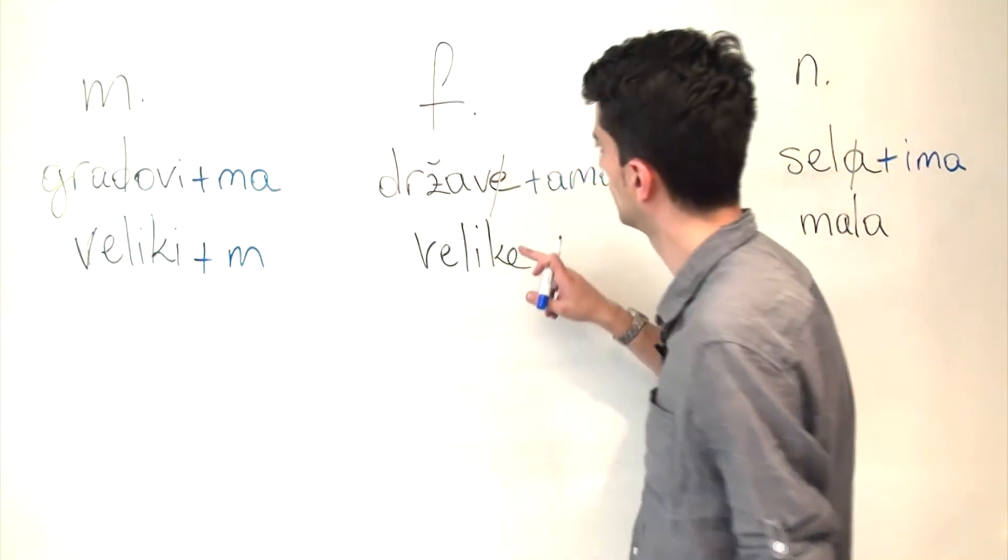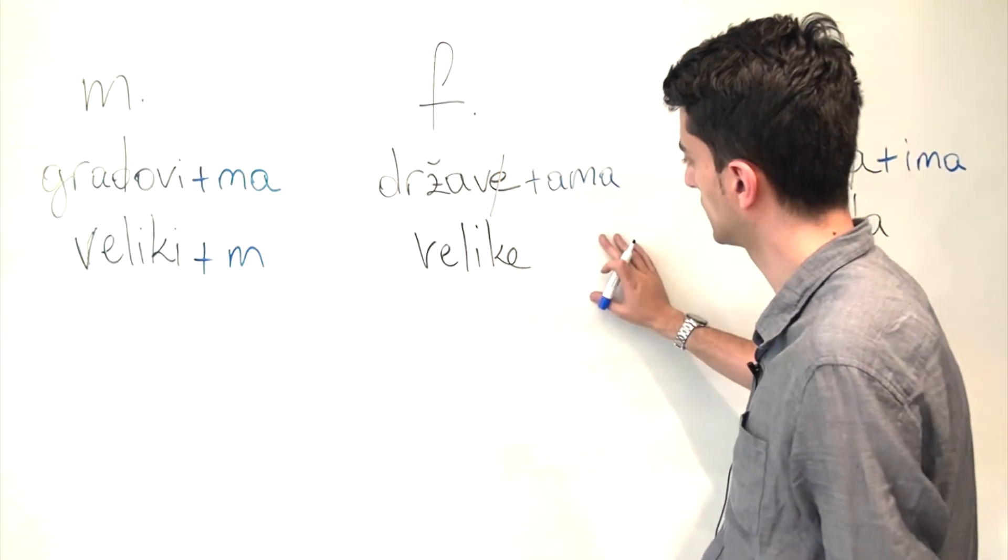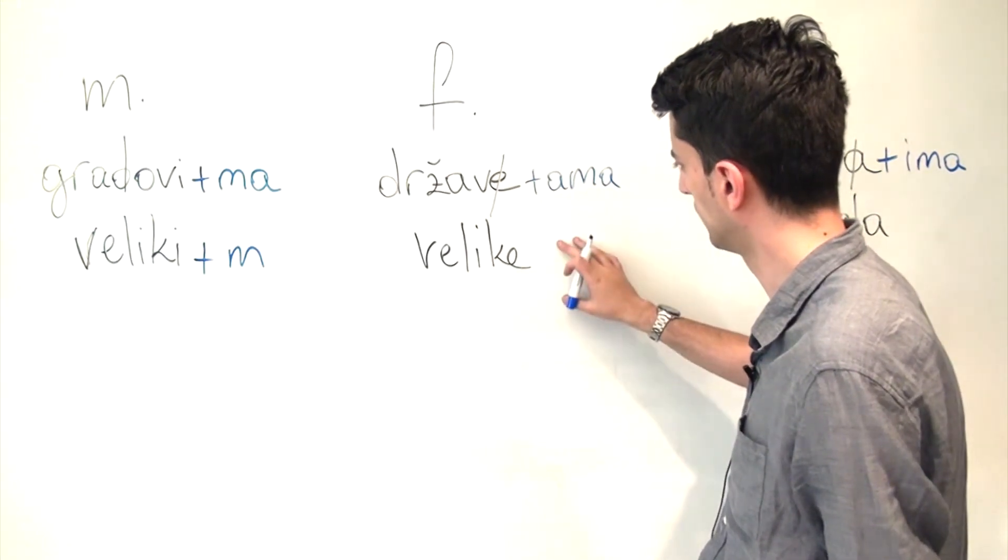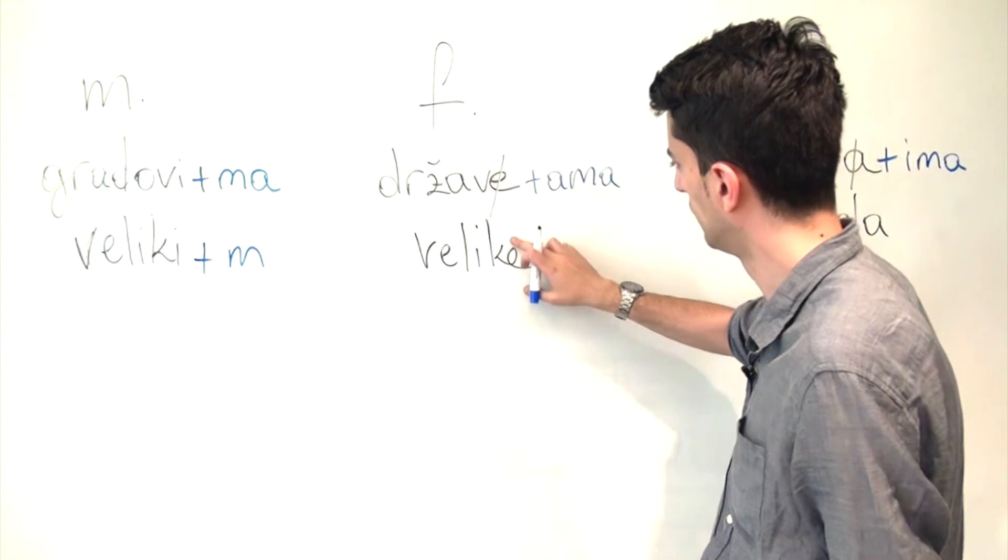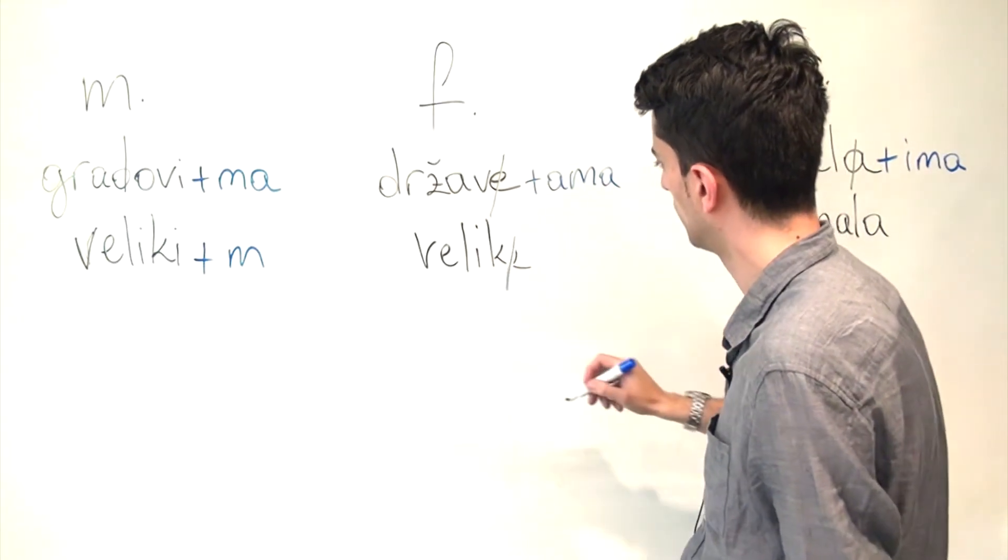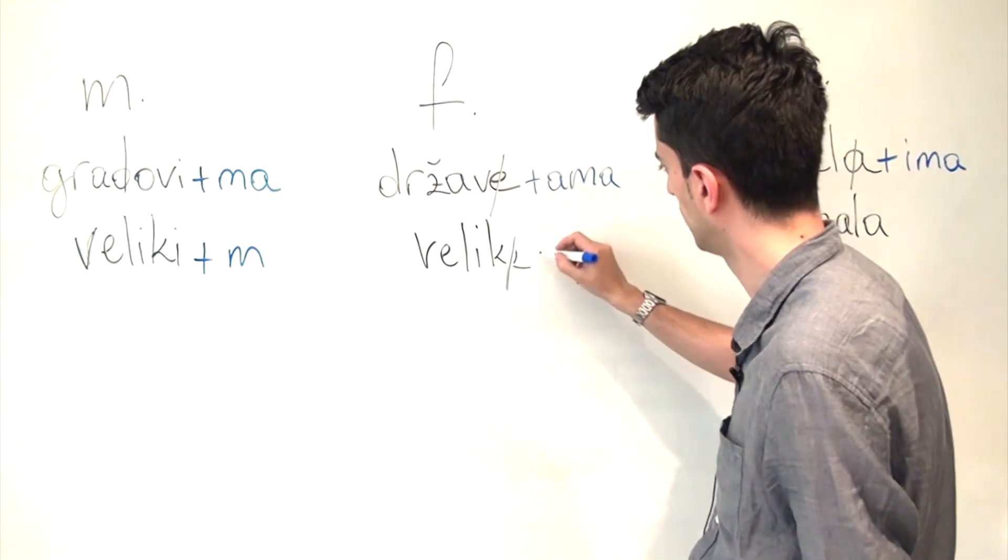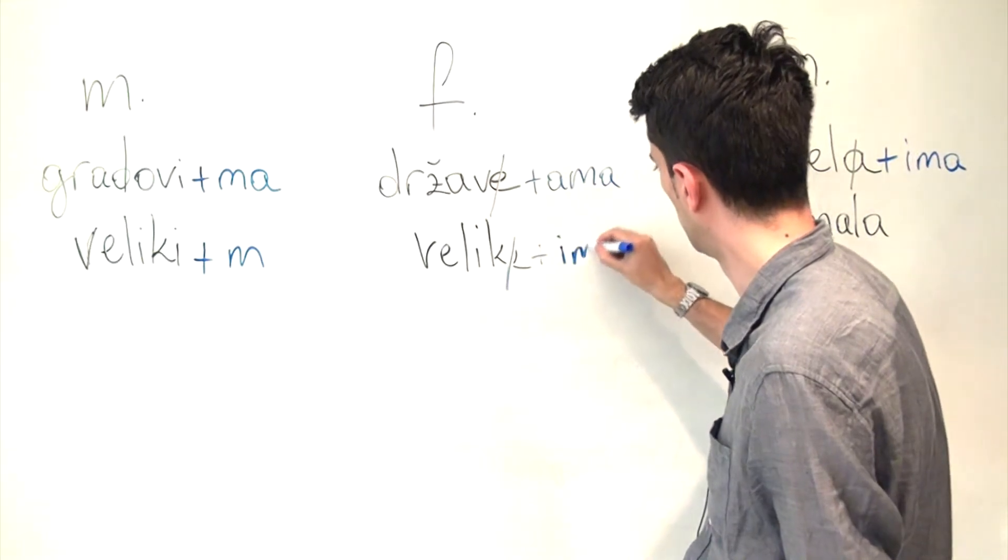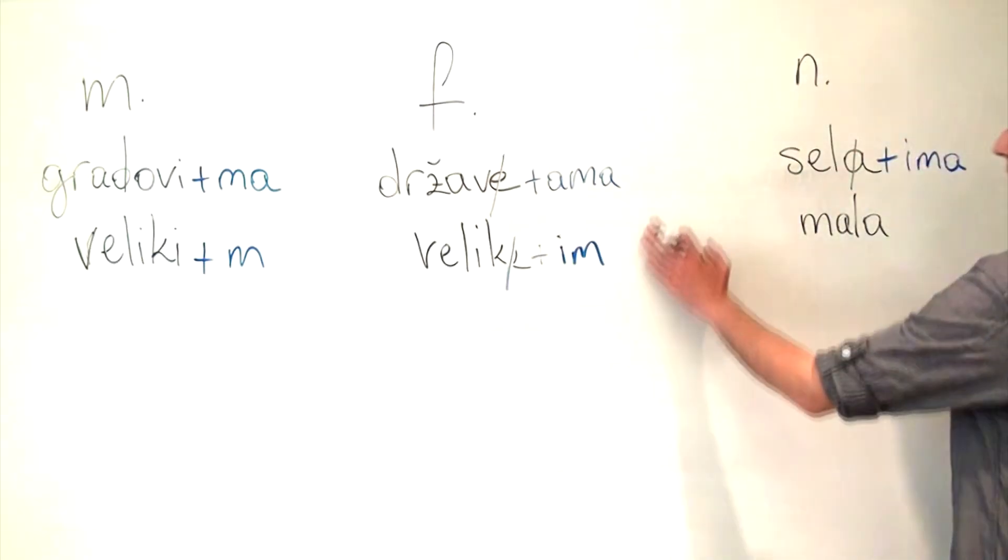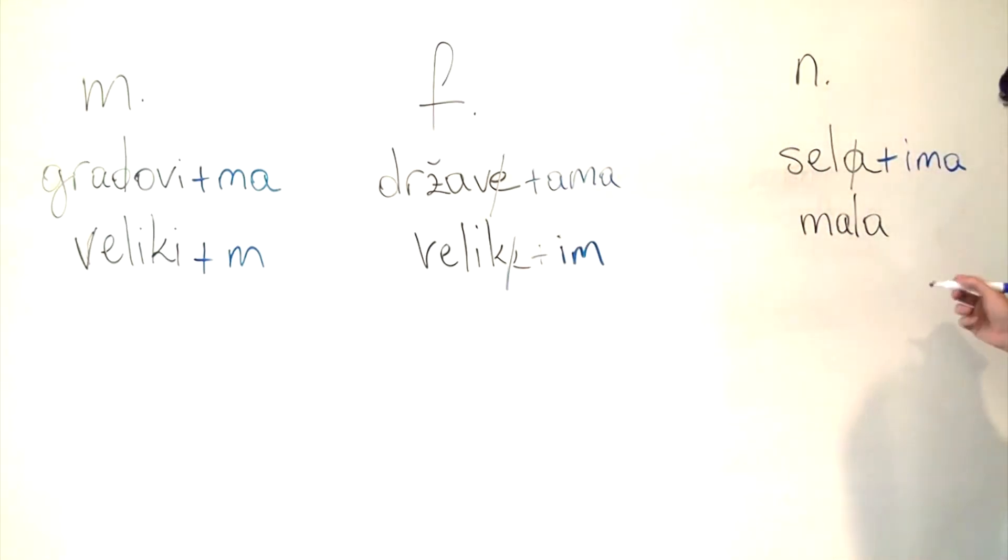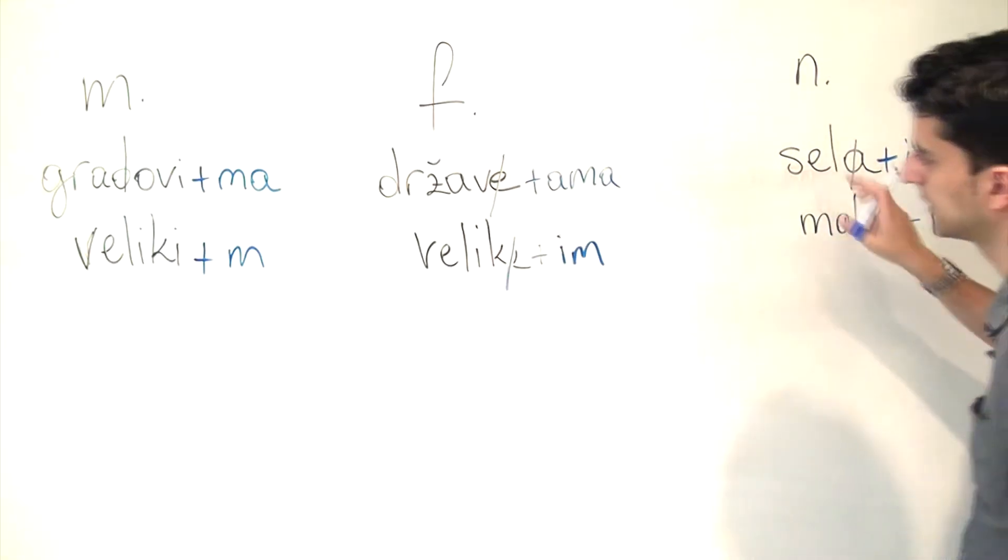Same thing happens with the adjectives in the feminine gender in plural. What you need to do is get rid of this vowel E and add IM: velikim državama. And with neuter, you pretty much do the same thing. You get rid of A and you add IM and what you get is malim selima.